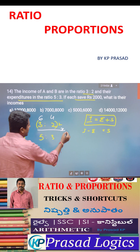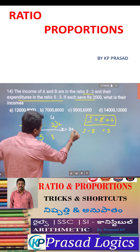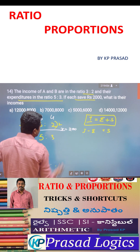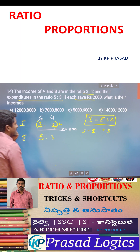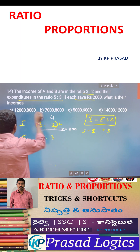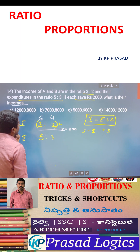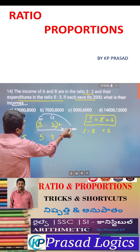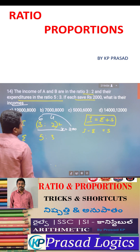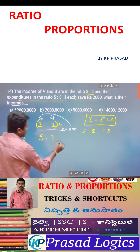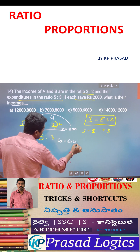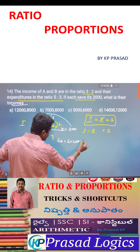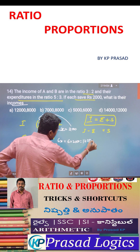Then X is equal to 2,000 rupees. The difference is 2,000 rupees. Then what is their income? Income is 6x. 6x is equal to 6 into 2,000 rupees, that is equal to 12,000 rupees.